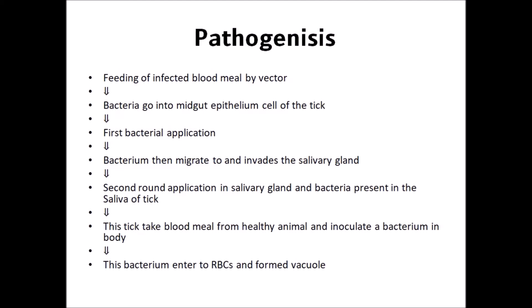Regarding the pathogenesis of anaplasmosis: it starts with the feeding of an infected blood meal by the vector. The bacteria enter the midgut epithelial cells of the tick, where the first bacterial replication occurs. The bacterium then migrates and invades the salivary gland, where a second round of replication occurs. Bacteria are then present in the saliva of the tick. When the tick takes a blood meal from a healthy animal, it inoculates the bacterium into the body, where it enters red blood cells and forms vacuoles.